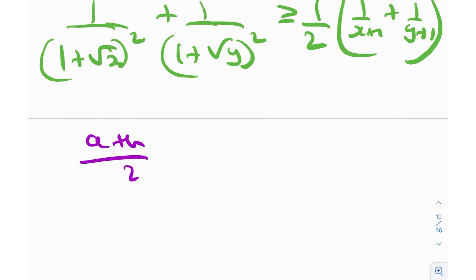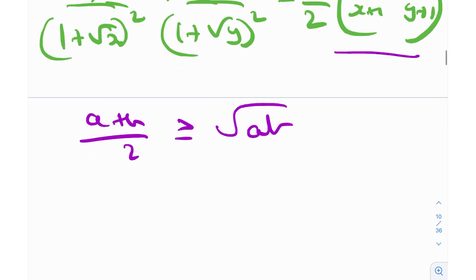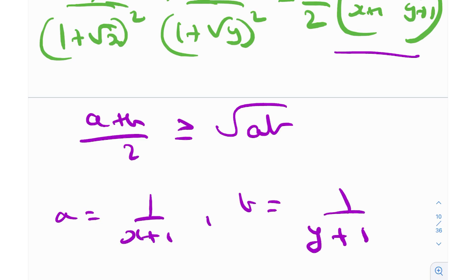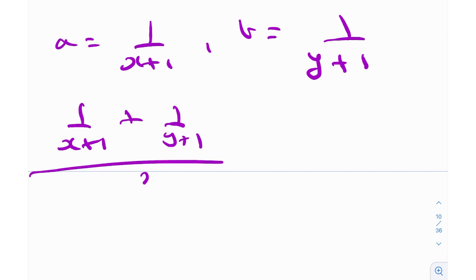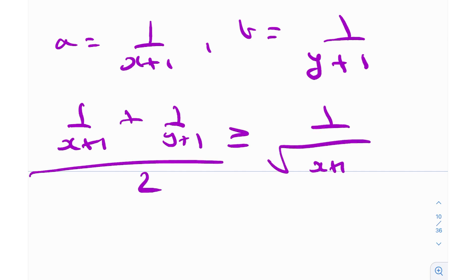We have two numbers on the right-hand side. Taking a = 1/(x+1) and b = 1/(y+1) and applying AM-GM: [1/(x+1) + 1/(y+1)] / 2 ≥ 1/√((x+1)(y+1)).